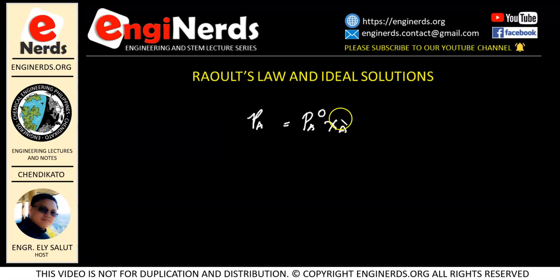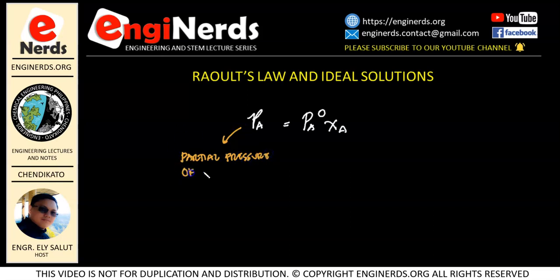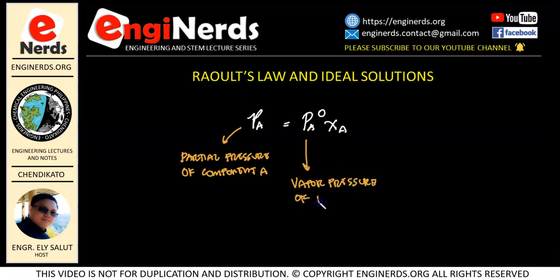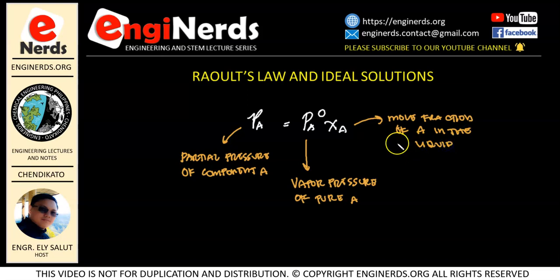So first let us identify the variables here. Pa is the partial pressure of component A. P̊A is the vapor pressure of pure component A. And xA is the mole fraction of A in the liquid. So basically in our textbooks, this is what we're going to find — the concepts of Raoult's Law expressed with these equations.